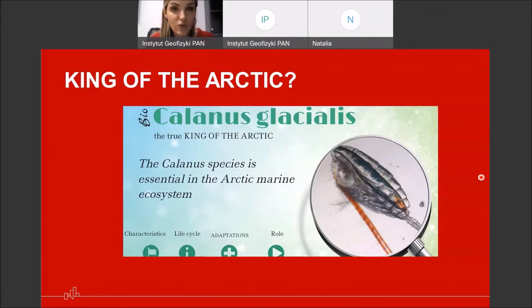But which of the crustaceans is the most important representative of zooplankton, especially in the Arctic? In other words, which organism is the most important, is the king of the Arctic? When we think of king of the Arctic, what first comes to our mind is the polar bear, I would say. But actually, king of the Arctic is much smaller. It's called Calanus glacialis. It's a true king of the Arctic.